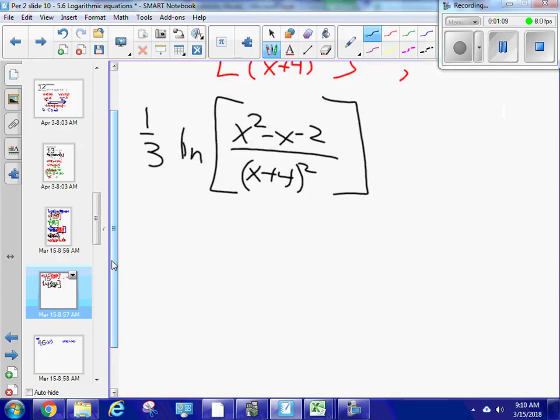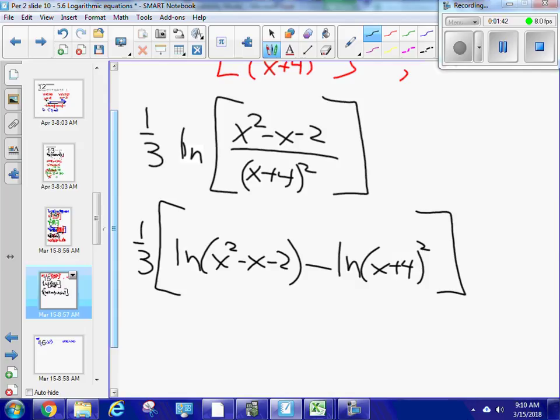So I have a quotient right here, right? So that looks like the second property there. I want to expand it using the second property. So I'm going to have one-third times ln x squared minus x minus 2 minus ln x plus 4 squared. Are we okay with that step? Follow me along.